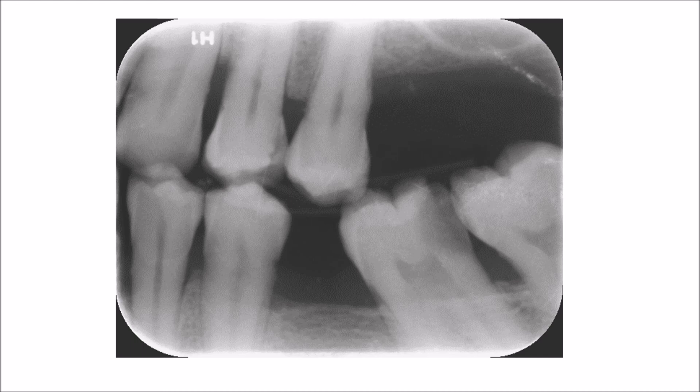Three: root caries always assumes this punched-out appearance. It's more or less similar to the appearance of the dentine cavity, always like a U-shaped lesion — more rounded than the dentine cavity — and the base is always towards the pulp.